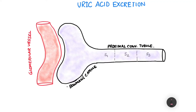Hello everyone, TheNerdMaddy here and in this video we are going to talk about how uric acid is excreted out of the human body. Uric acid is formed as a result of purine metabolism. Purines are adenine and guanine and when the purine is metabolized they end up becoming uric acid in the body of humans.